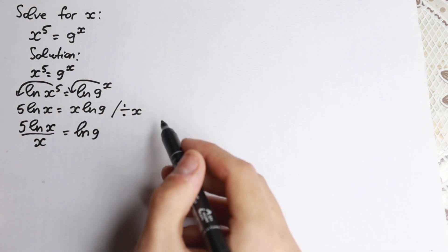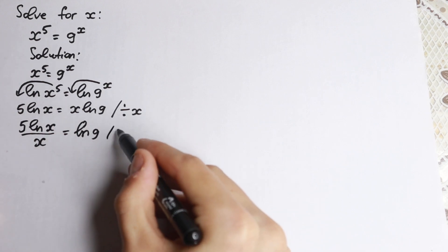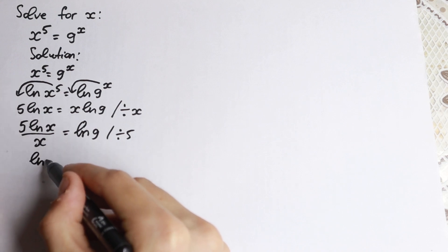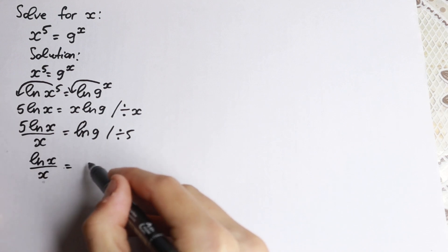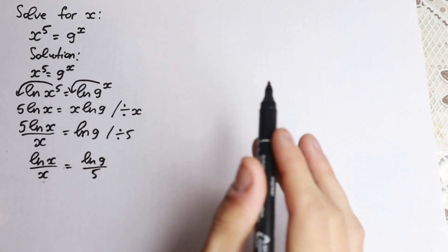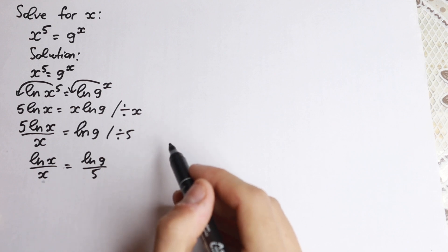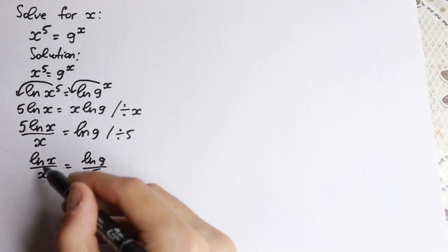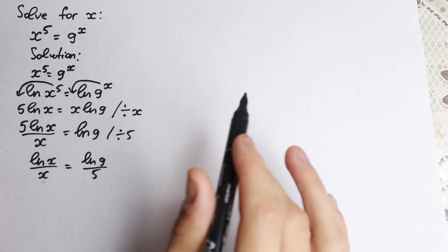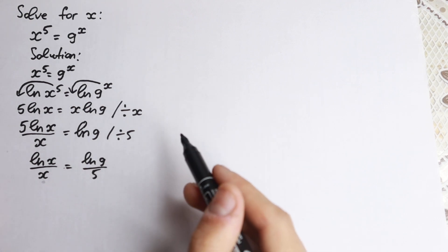Next we divide both sides by 5, which cancels the 5 on the left. So we get: natural log x over x equals natural log 9 over 5. This is our expression with x on the left and a constant on the right — we've simplified it nicely. Now we need to understand a little bit about the Lambert W function and apply it step by step.